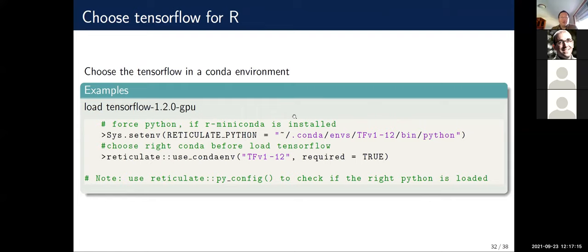Once you have multiple TensorFlow versions in different conda environments, there are two ways to choose between them. Method one: set the system variable RETICULATE_PYTHON pointing to the Python binary in the desired environment — for example, pointing to the tfv1-12 environment. Method two: use the reticulate function use_condaenv(), but remember to set required=TRUE otherwise it won't load the correct Python version. I'd also recommend using py_config() to check that the right Python is loaded before running your script.